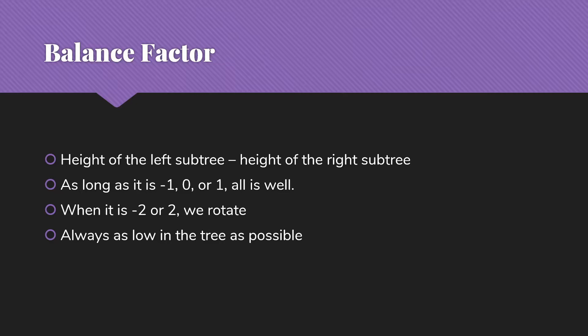So this balance factor thing I mentioned, we're going to take the height of the left tree minus the height of the right subtrees. As long as that difference is minus one, zero, or one, then all is well. We're in balance. We meet the AVL rules. When the difference is minus two or two, then we're going to have to do this rotation thing.